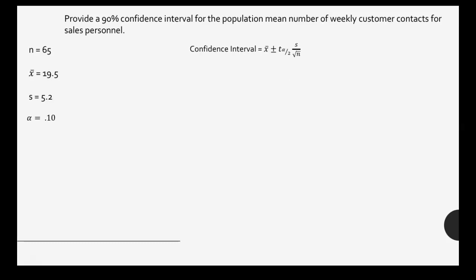So we'll use that formula on the screen now. We also notice that we will need an alpha. Our alpha in this case is 0.1 — we find that by taking 1 minus our confidence level, so 1 minus 0.9 gives us 0.1. In our formula we need alpha divided by 2, so alpha divided by 2 equals 0.05.